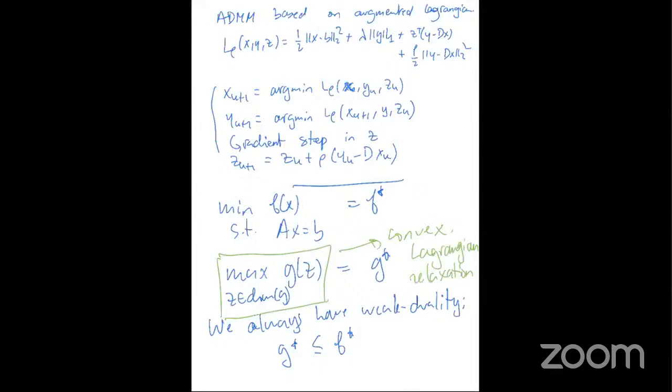For example, in the very first lecture I talked about the community detection problem — the maximization of a linear form subject to a matrix being positive semi-definite. That happens to be a Lagrangian relaxation of a hard combinatorial optimization problem, though I didn't say it that way at the time.